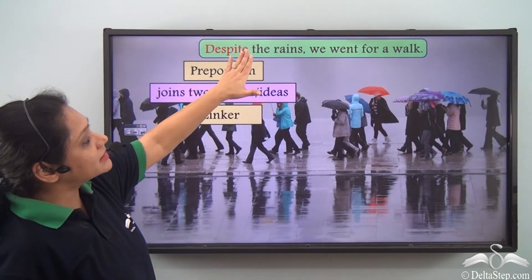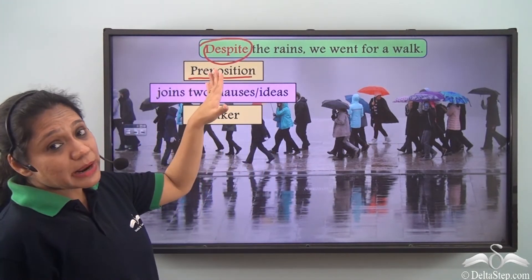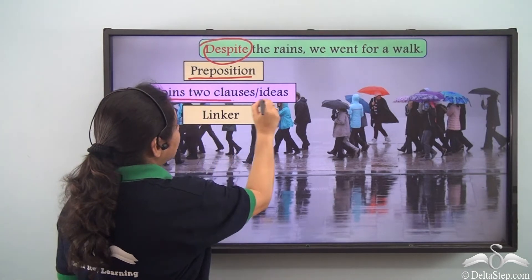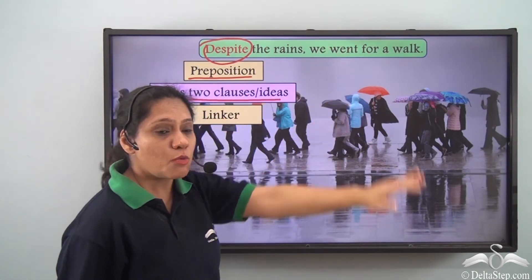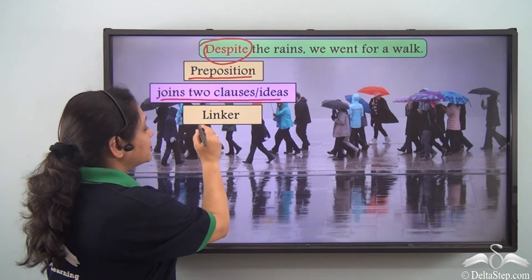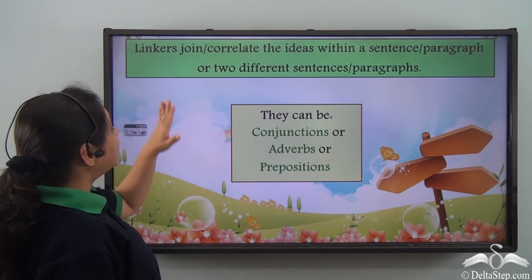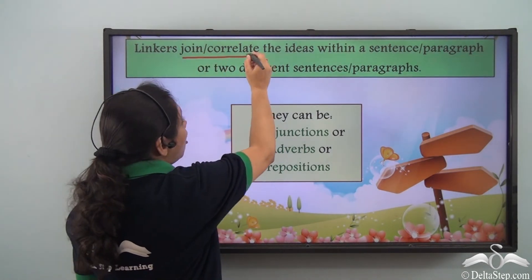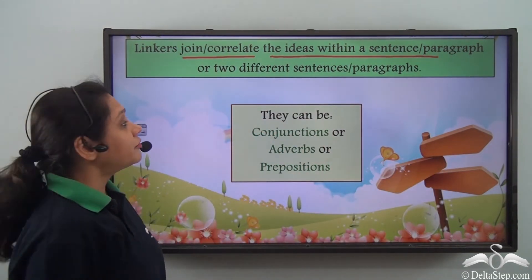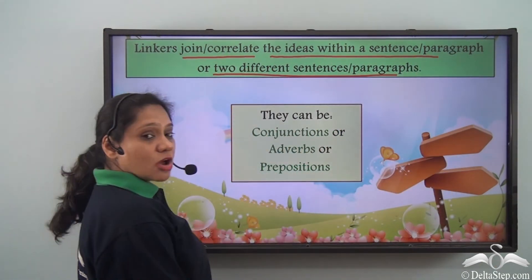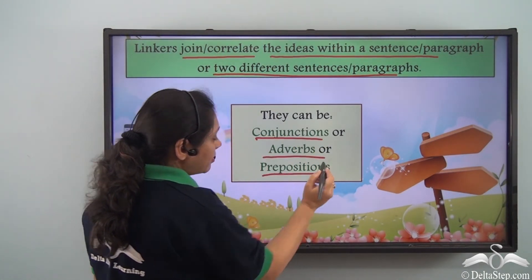'Despite the rains, we went for a walk.' Here 'despite' is a preposition joining the two clauses or ideas within the same sentence, so the preposition is behaving like a linker. Linkers join or correlate the ideas within a sentence or a paragraph, or between two different sentences or paragraphs. They can be conjunctions, adverbs, or prepositions.